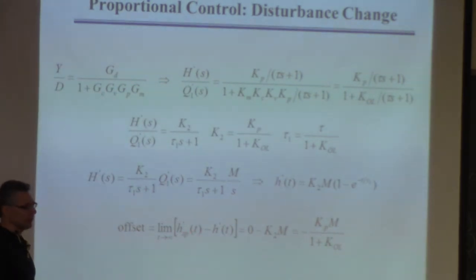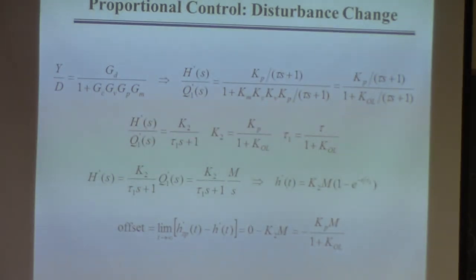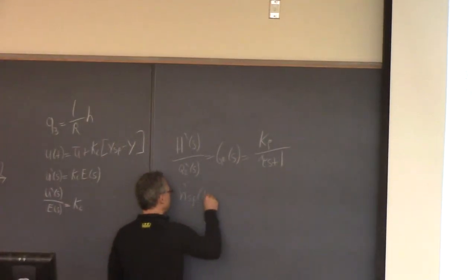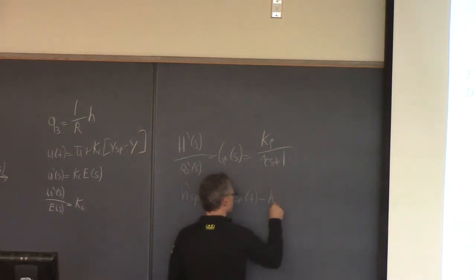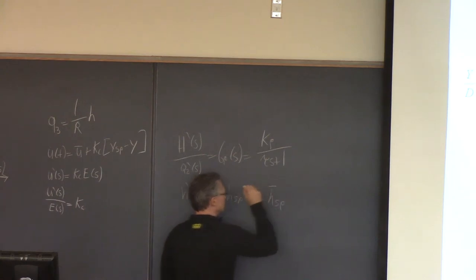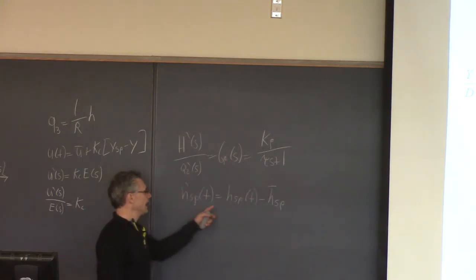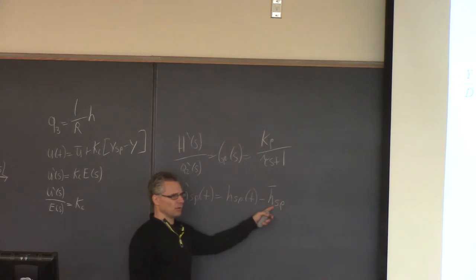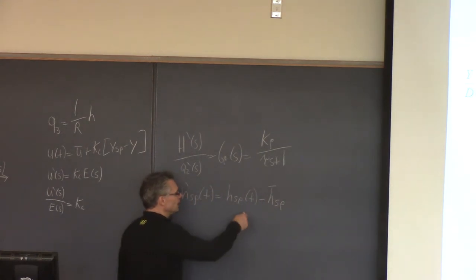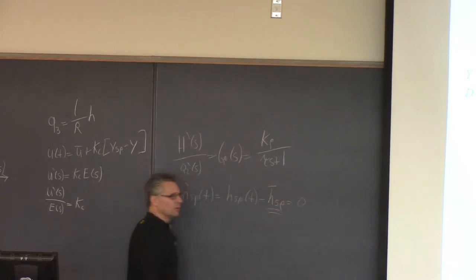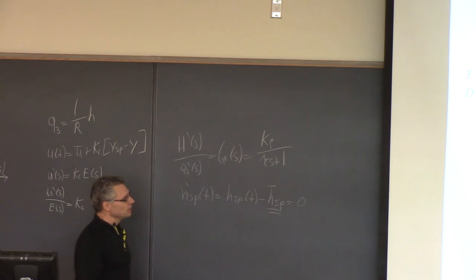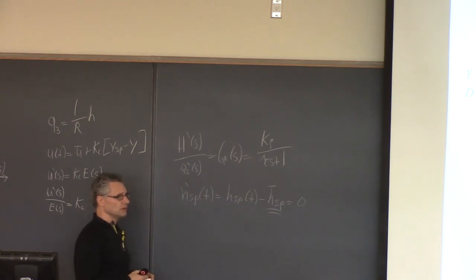That means it remains at the nominal value. That's the definition of the deviation variable — it's the actual set point minus the nominal value of the set point. If I'm not changing this value, then this is zero. You're always at that nominal value. So in the deviation world, if the variable is not changing, it's zero. That's another reason it's really convenient to use deviation variables.